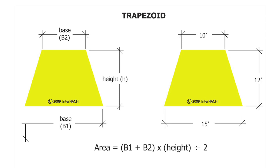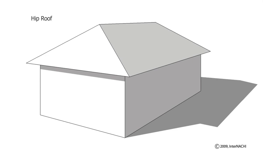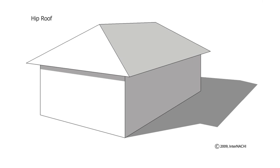In this example, one of the hip roof's trapezoid planes is: ten plus fifteen times twelve, which equals three hundred, divided by two equals one hundred fifty. Remember, that's just for one of the trapezoid shapes of the hip roof. In this example, there are two trapezoid shapes. As shown in the illustration, this hip roof has two trapezoid shapes and two triangle shapes.